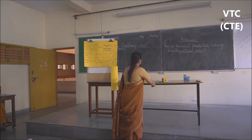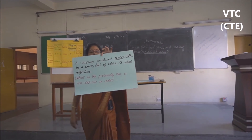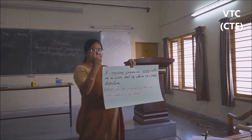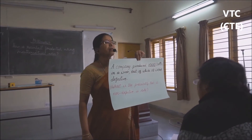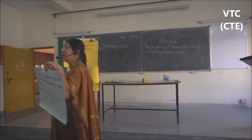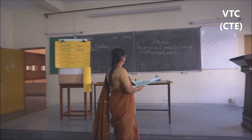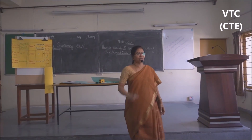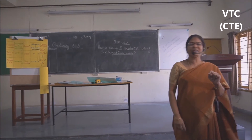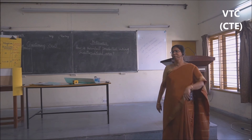Look at another example where a company is preparing bolts. One thousand bolts are prepared, out of which twelve are defective. What is the probability that one piece sold is defective? Twelve by thousand. What is the probability it is not defective? Nine hundred and eighty-eight by thousand. Suppose one lakh lottery tickets are sold and one first prize has to be declared, and you buy only one ticket. What is the prediction that you get the first prize? One by one lakh.